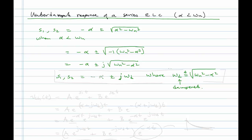This just makes the expression simpler and less cluttered. Recall that we can write our homogeneous solution as A·e^(S1·t) + B·e^(S2·t). We're going to plug in our values for S1 and S2.